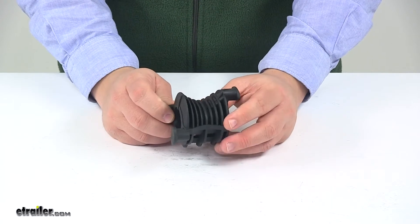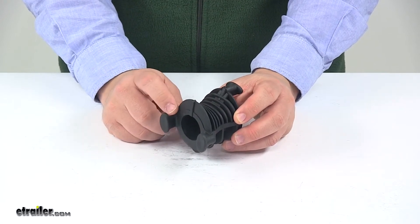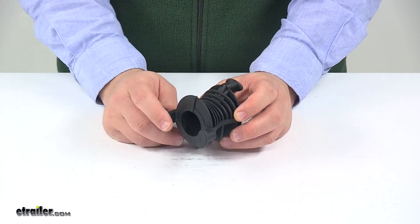It is a direct replacement part, so it's identical to the one that came from the factory on your Vertex bike rack.